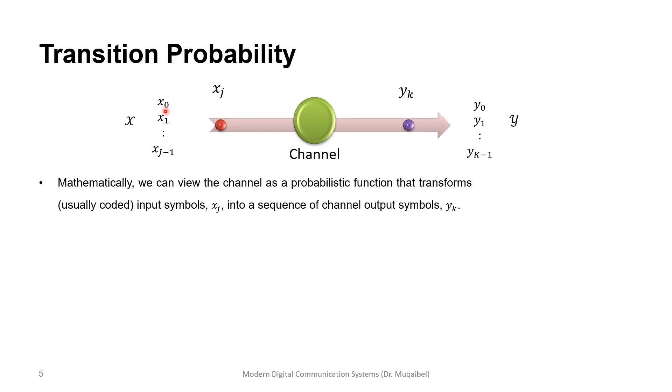Now let's focus more on the transition probabilities. We have the symbols here, X's, and here we have the output. Mathematically, we can view the channel as a probabilistic function that transforms the input symbols, which are usually coded, into the output symbols Y.